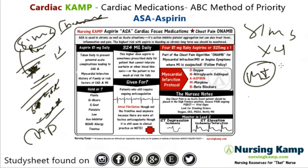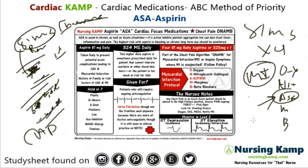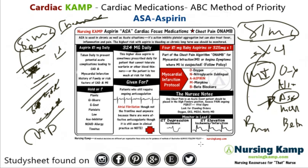This is part of the MONA MB algorithm. The order of priority is: oxygen first, then nitro, then aspirin, then morphine, then beta blockers. For the MI dose, you give four baby aspirin — 81mg each — and the patient chews them.